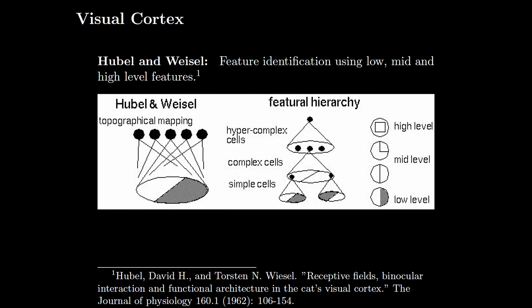As studied in the class, the experiments done by Hubel and Wiesel on the visual cortex of a cat say that the features are arranged in a hierarchy of simple cells, complex cells, and hypercomplex cells, which are responsible for identifying low-level, mid-level, and high-level features respectively. This idea has been used in neural networks for image classification.